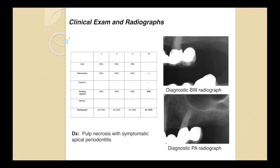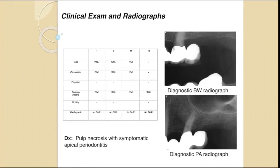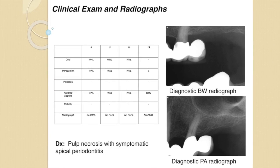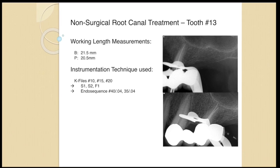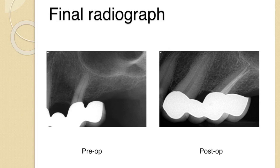Regarding the tooth itself, although it was part of a bridge, there was a root surface exposed, so I was able to perform thermal testing. It was cold negative, percussion positive, palpation negative, probing depth was normal, and there was no significant periapical radiolucency. The diagnosis was pulp necrosis with symptomatic apical periodontitis. There were two canals — buccal at 21.5mm, palatal at 20.5mm — and the case was instrumented. You can see the pre-op and post-op. That's a beautiful case — doing access through a bridge on a premolar abutment requires excellent orientation.